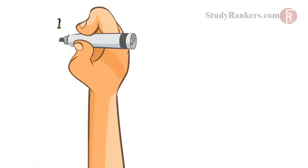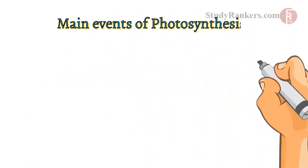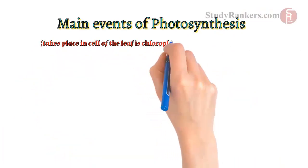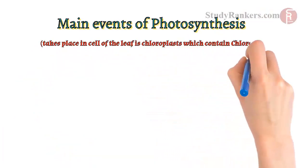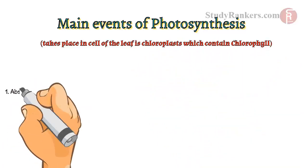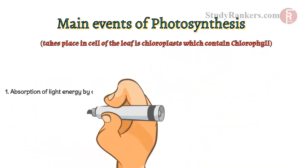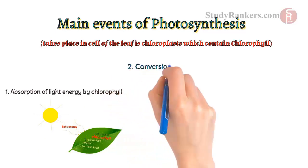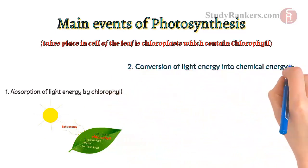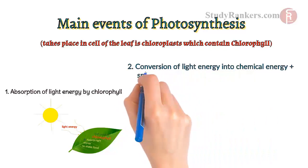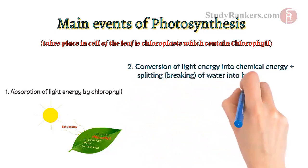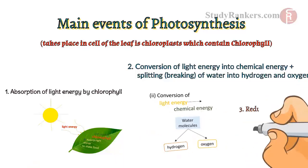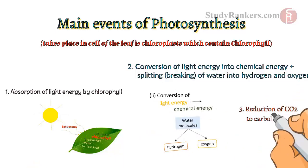The main events of photosynthesis which take place in the chloroplast of the cell of the leaf — which contains chlorophyll — are: first, absorption of light energy by chlorophyll; second, conversion of light energy into chemical energy plus splitting of water into hydrogen and oxygen; and at last, reduction of CO2 to carbohydrate.